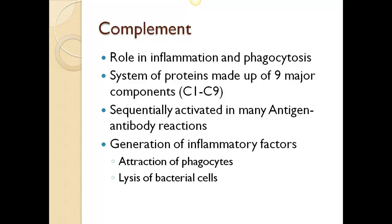The complement system plays a role in inflammation and phagocytosis. It helps or 'complements' the ability of antibodies and phagocytic cells to clear pathogens from organisms. There are nine major components referred to as C1 through C9 that help generate inflammatory factors. When stimulated by one of several triggers, proteases in the system release cytokines and initiate and amplify a cascade of further release of inflammatory factors.